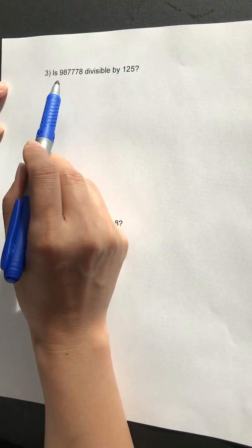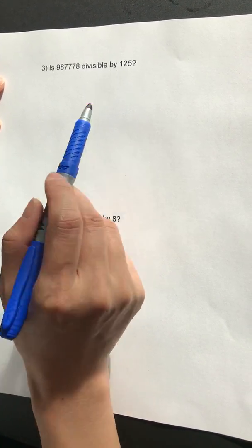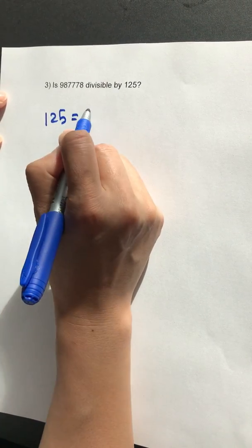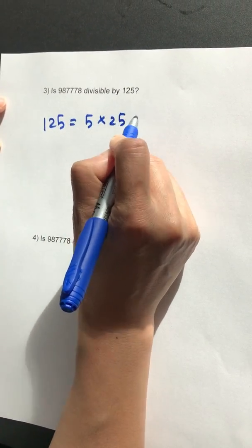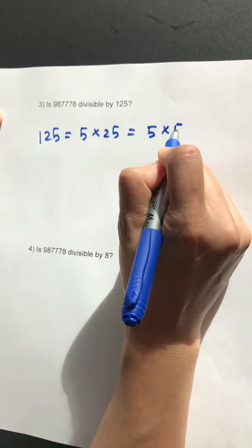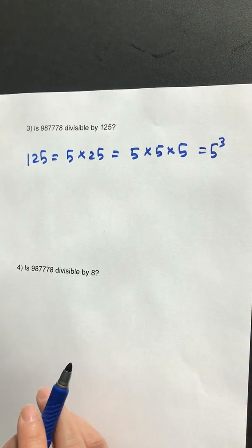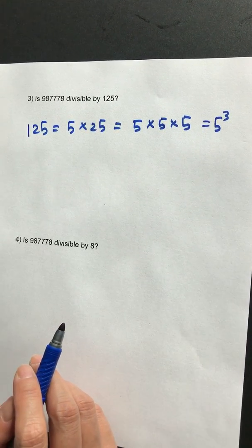Number three: is this number divisible by 125? We know that 125 is 5 multiplied by 25, and 25 is 5 multiplied by 5. So you've got three fives multiplying together—it's 5 to the power of 3.